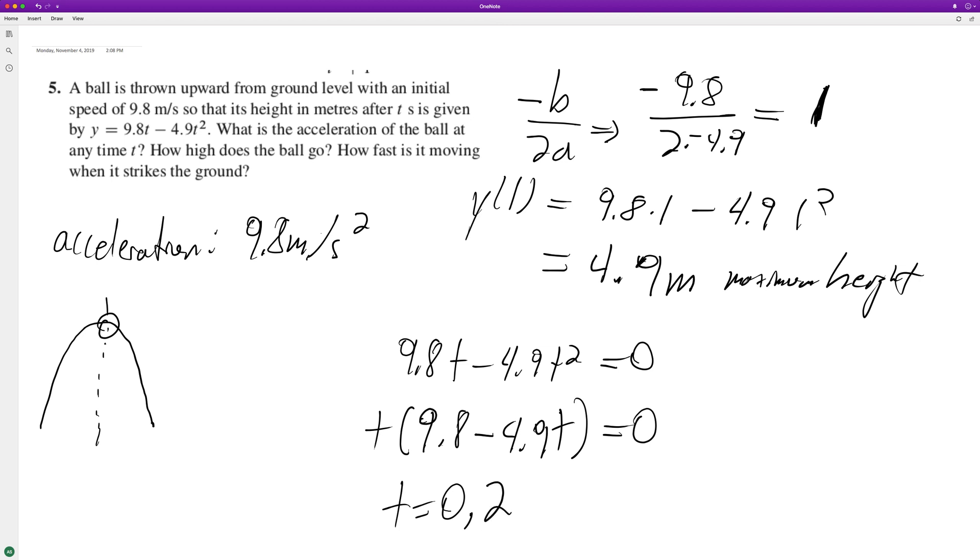So zero, it starts off at the ground, or time T equals zero it's at the ground, but at two seconds, that's when it hits the ball again. So it hits ground.